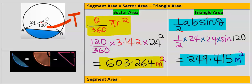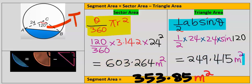The area of the segment is the area of the sector minus the area of the triangle, which gives 353.85 square meters.